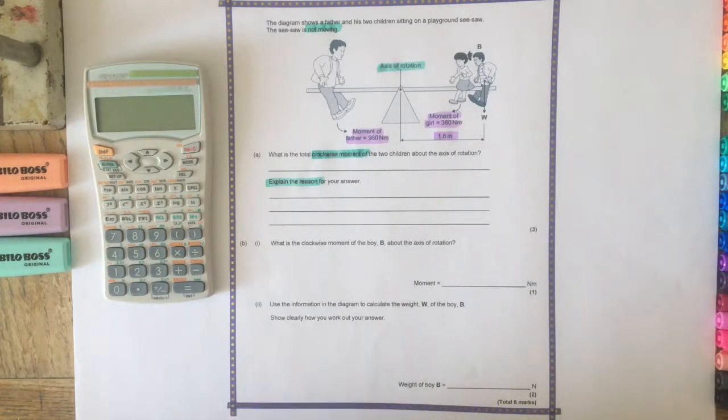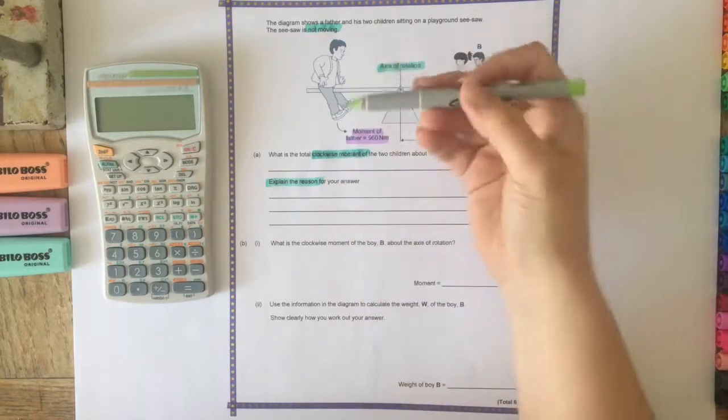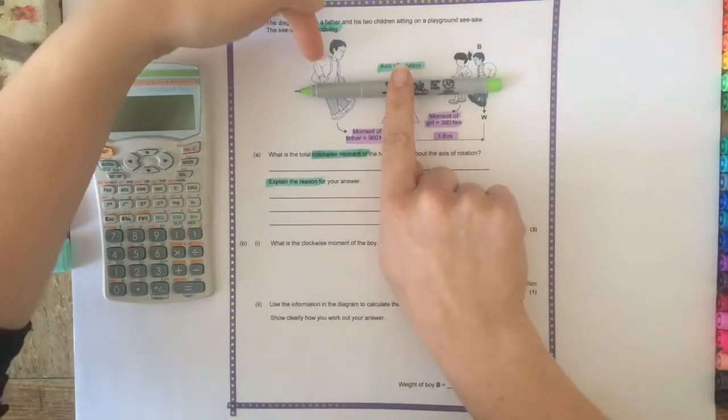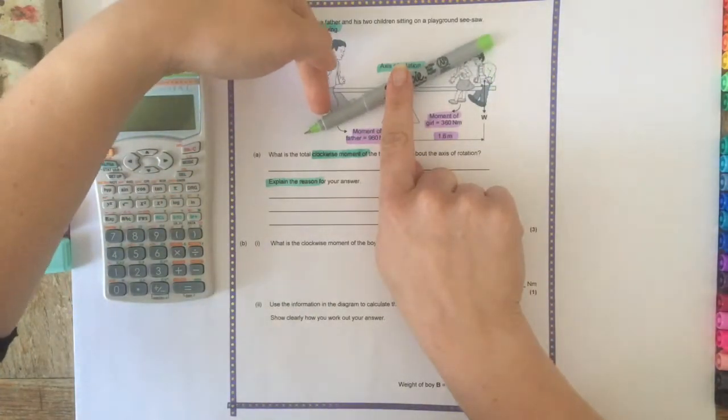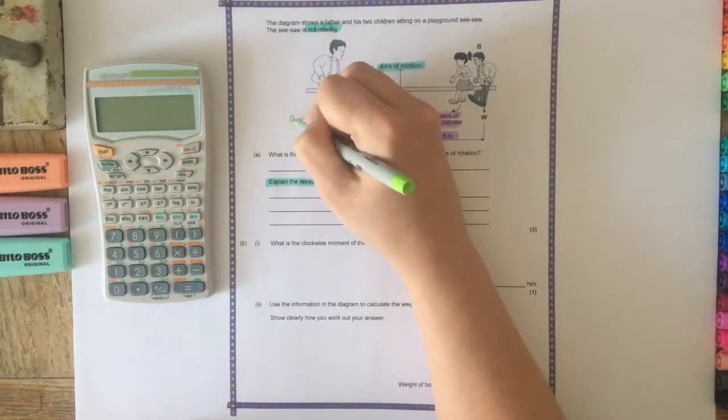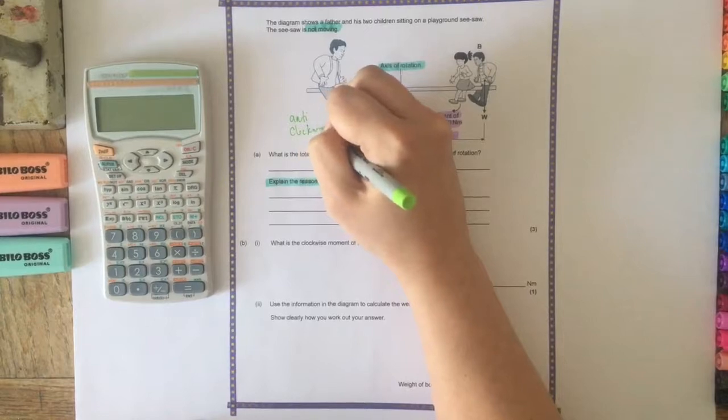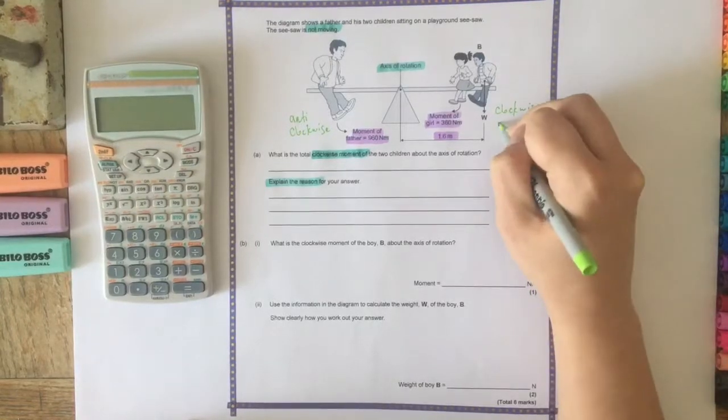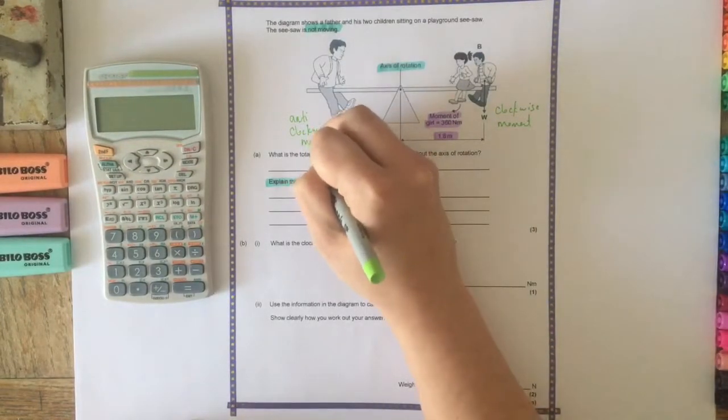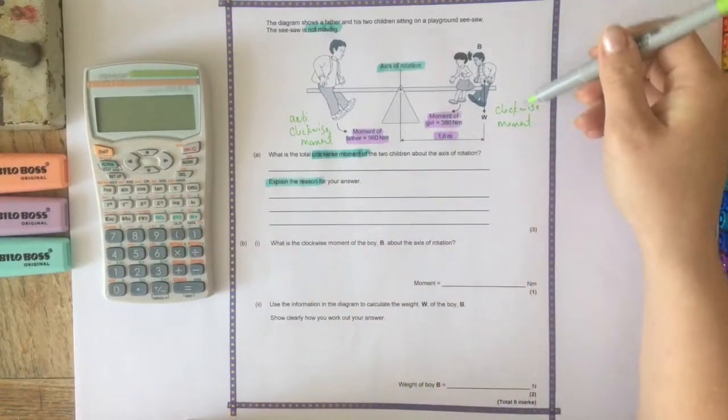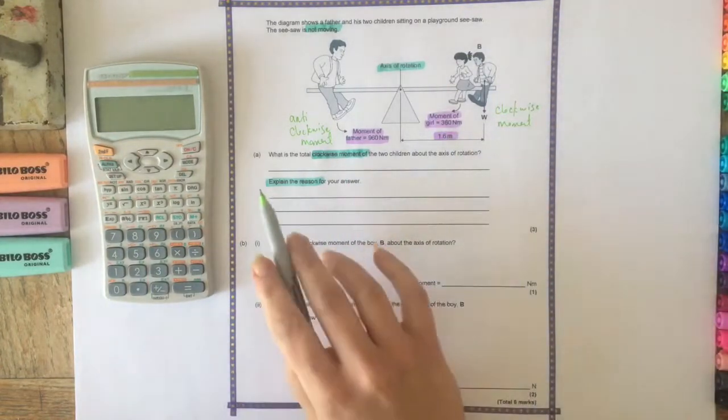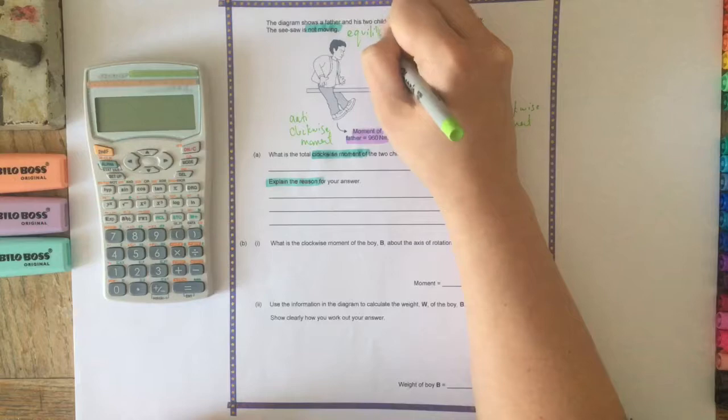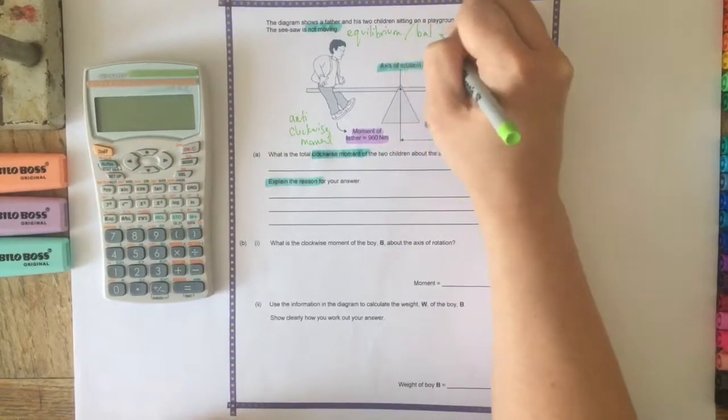So we know that the anti-clockwise moment - so if this is balanced and this is pushing down, so that would be pushing anti-clockwise - so therefore the father's moment is anti-clockwise and the children are the clockwise moment. So what is the clockwise moment of these children? We know that it's not moving, so if it's not moving then it is in equilibrium, or we could say that it is balanced.